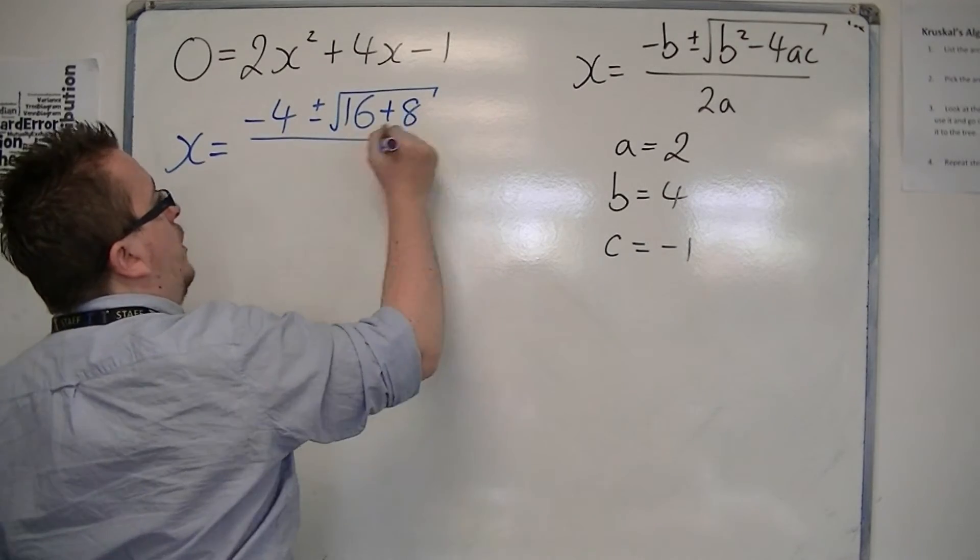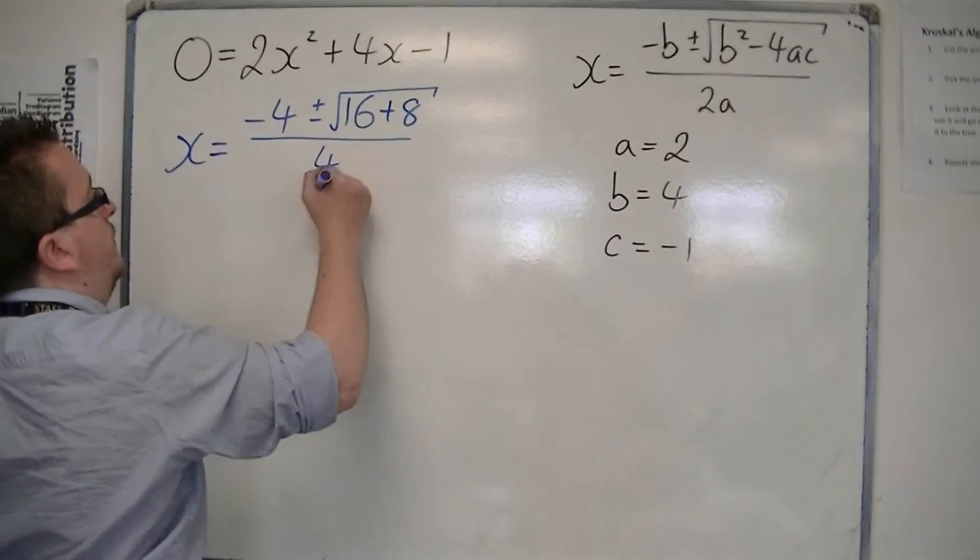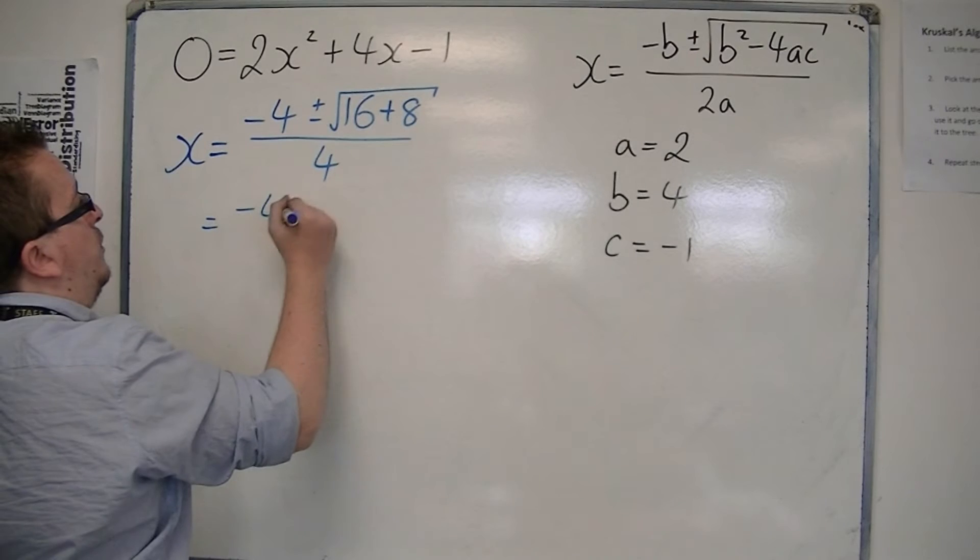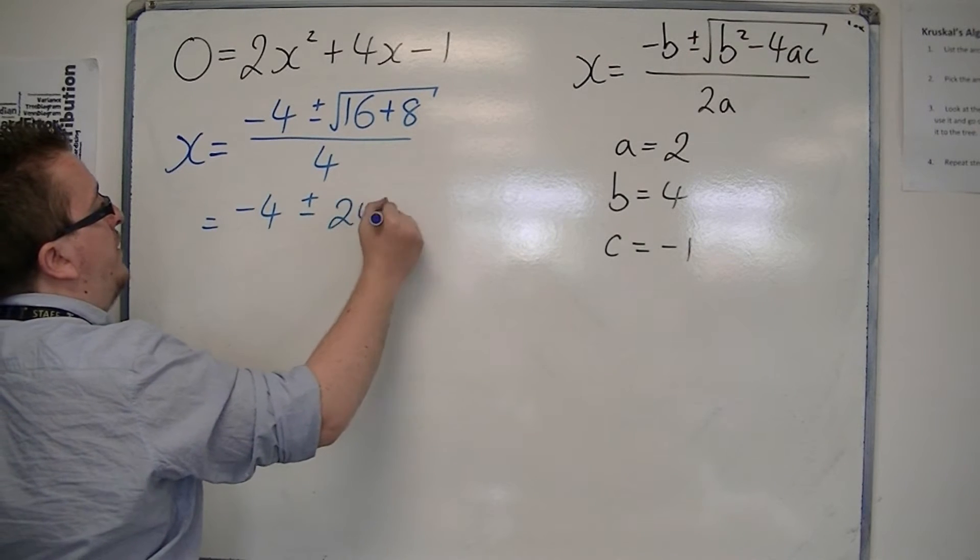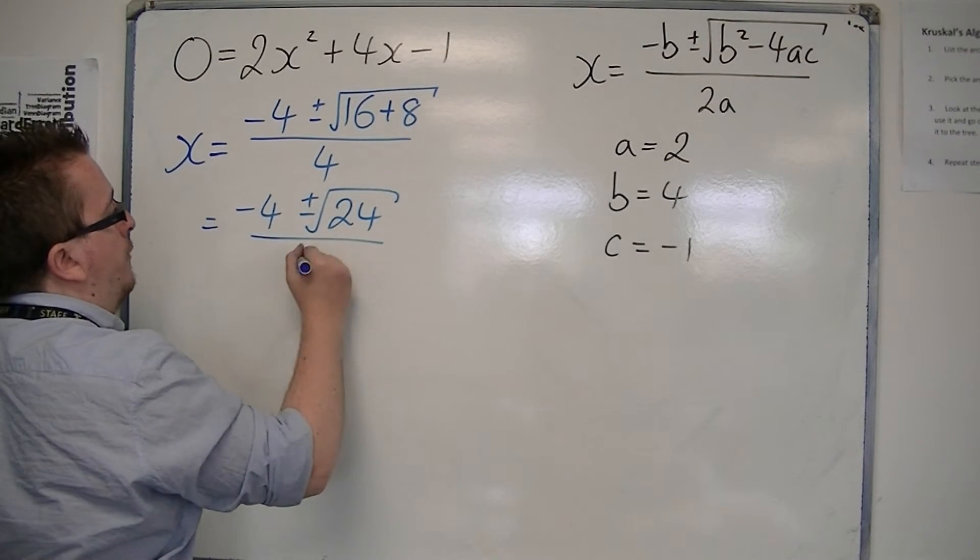all over 2 lots of a, so that's 4. So we have minus 4, plus or minus the square root of 24, all over 4.